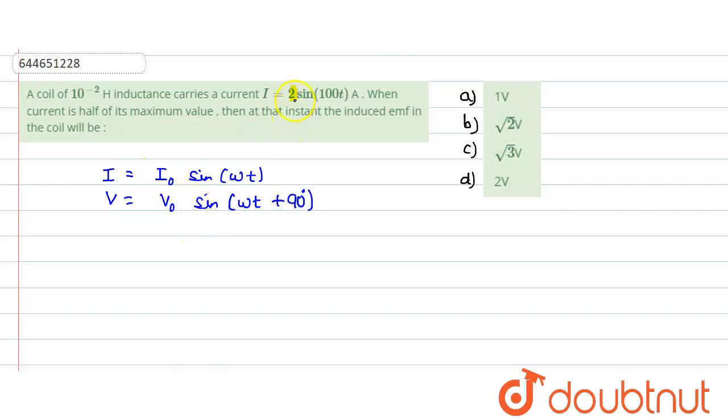What is the value of I naught? We can directly see from this expression, its value is 2. What is the value of omega? Its value is 100. First of all, we should calculate what is the value of V naught, then we will be coming to the question. We have just introduced this is a multiplication sign.